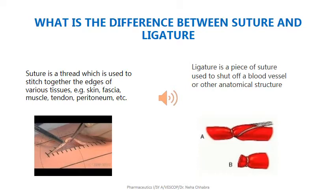The first thing in this chapter that you will learn is the definition of suture and ligature — what these two things are and how they differ from each other. Both are a strand or fibre. A surgical suture is a strand or fibre or thread which is used to hold wound edges in apposition. The word apposition means positioning of things side by side or close together. It is a strand or fibre used to hold wound edges in apposition during healing.